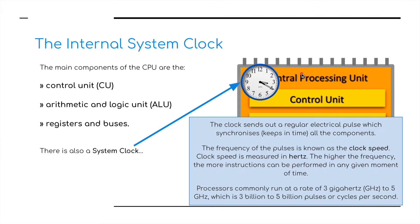The internal clock is the part that sends out a regular electronic pulse, which synchronizes — or rather keeps in time — all of the components in a computer. The frequency of the pulses is known as the clock speed, and the clock speed is measured in hertz. The higher the frequency, the more instructions can be performed in any given moment of time. Processors are commonly run at a rate of 3 gigahertz to 5 gigahertz, which is 3 billion to 5 billion pulses or cycles per second — so it's running very, very quickly.